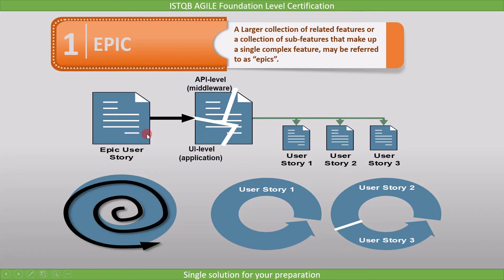One user story can describe what is required at the API level, middleware, while another story describes what is needed at the UI level application. These collections may be developed over a series of sprints. User story one can be implemented in one sprint, and user story two and three can be implemented in another sprint. The important point is each EPIC and its user stories should have associated acceptance criteria. This is all about EPIC.